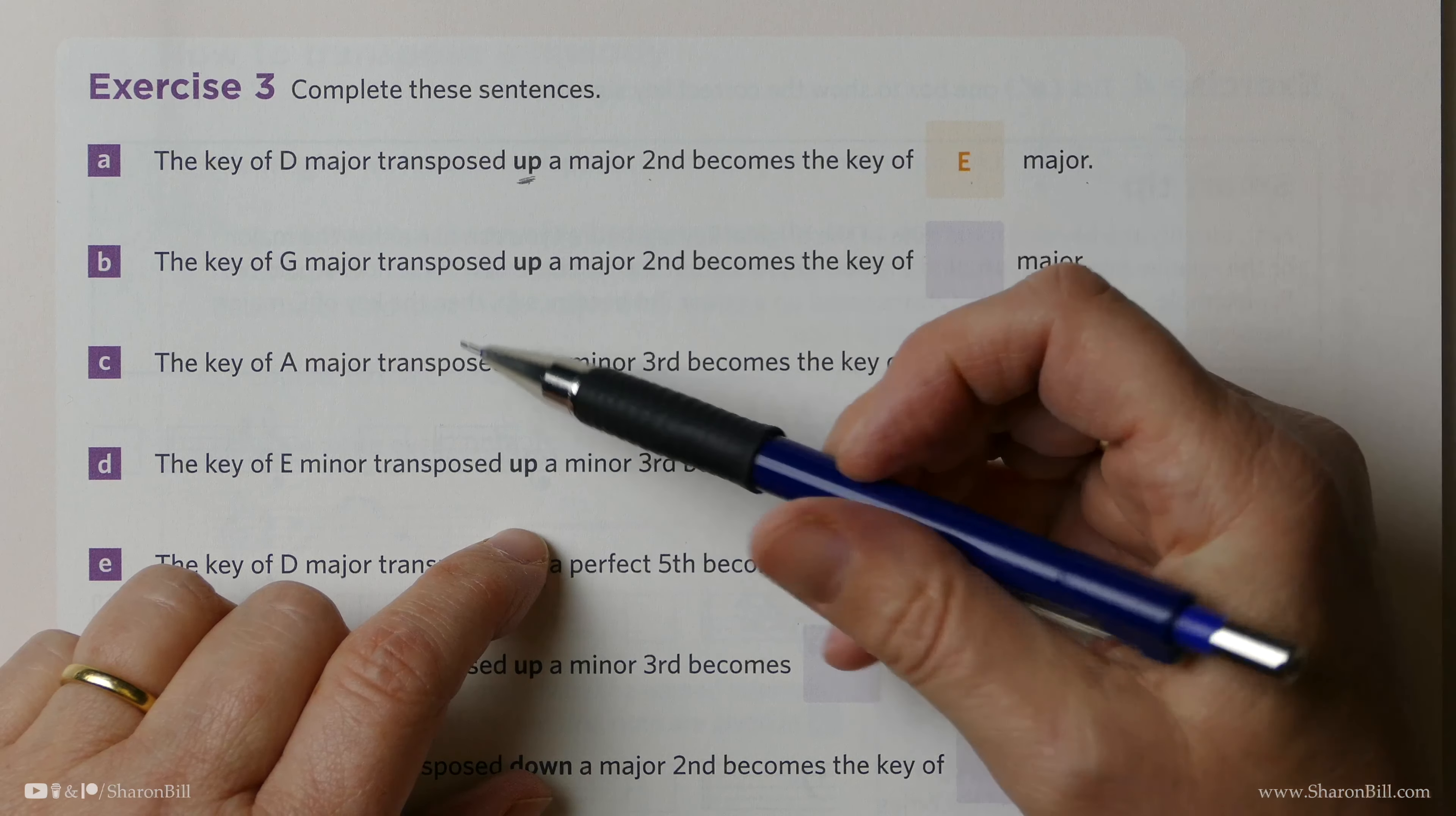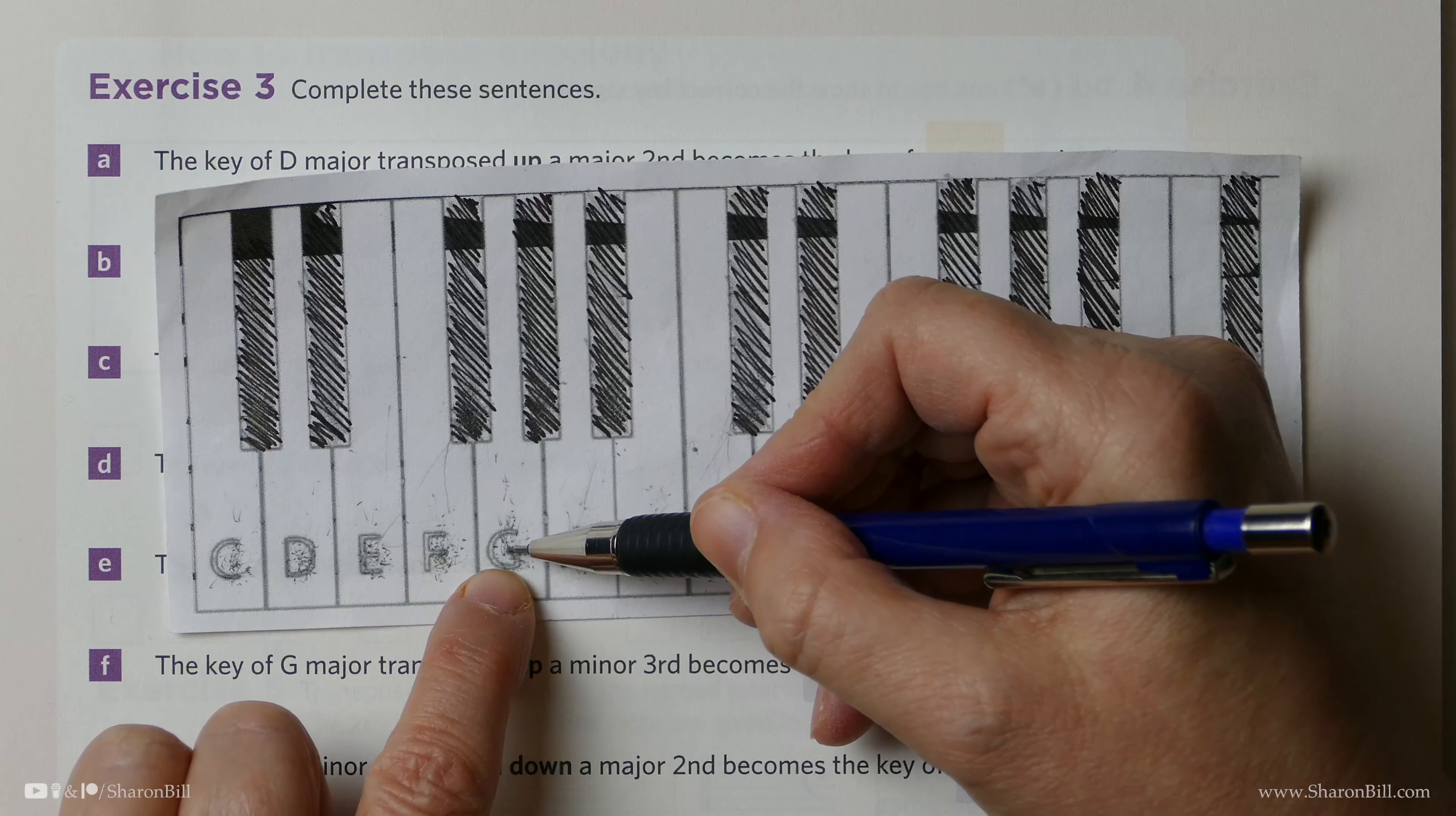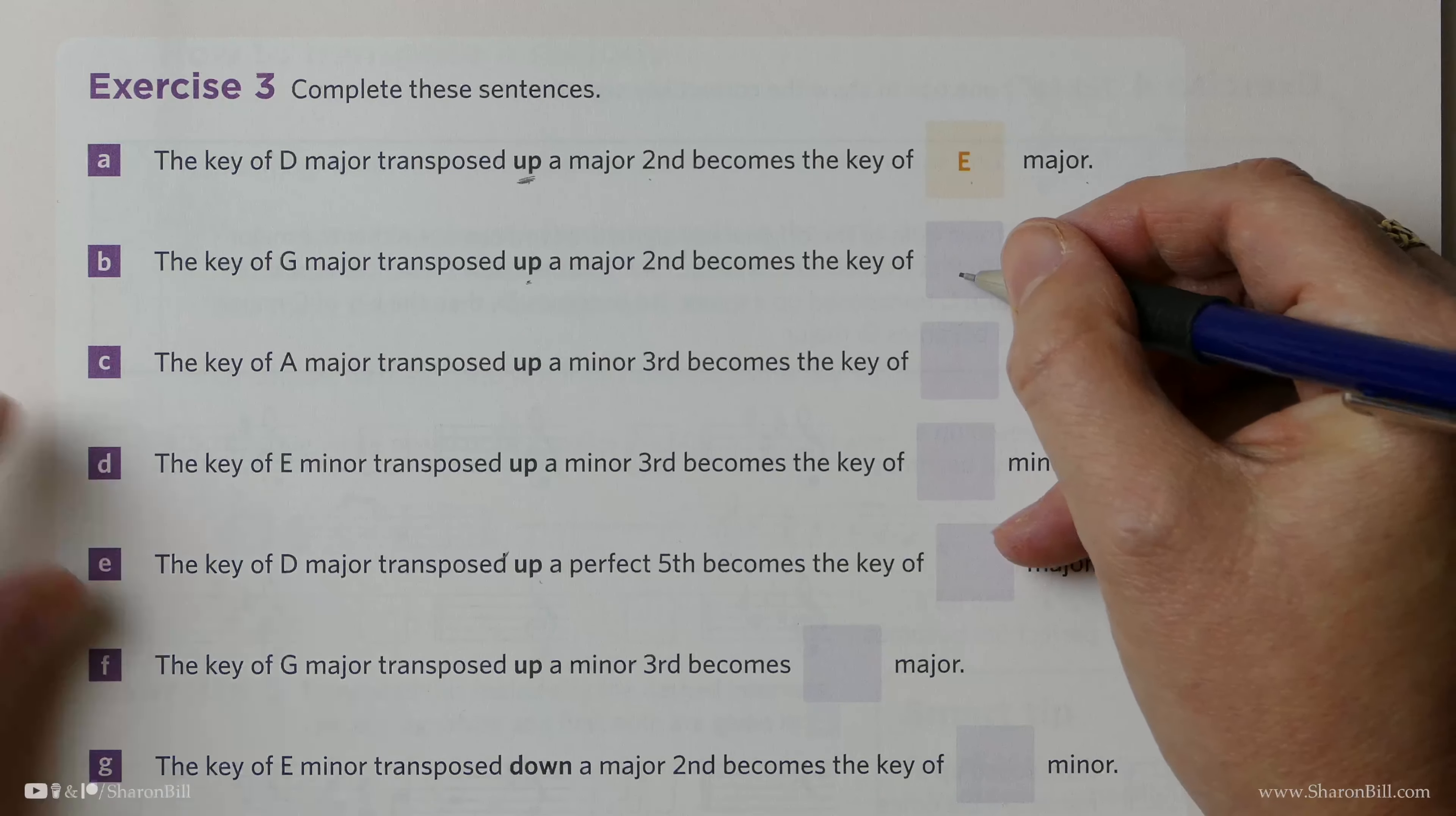The key of G major transposed up a major 2nd becomes, so G major, so G up a major 2nd, a full step up, takes us to A. So G major, up a major 2nd, takes us to A major.